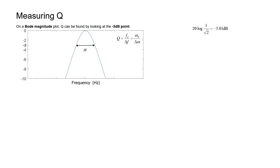Let's now look at this relationship between Q and the frequency response of the filter. I've shown how Q can be found by deriving the transfer function and then looking at the denominator, but you can also get a feel for Q by just looking at the transfer function of the filter itself. Let's take a look at a Bode magnitude plot of a hypothetical bandpass filter. We have decibels on the left axis and frequency on the horizontal axis, also on a log scale. If it's a two-pole filter, it's going to rise by 20 decibels per decade and then fall by 20 decibels per decade.